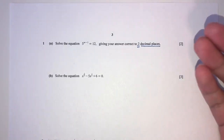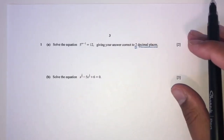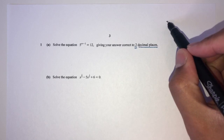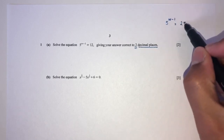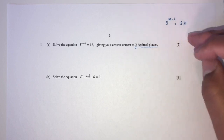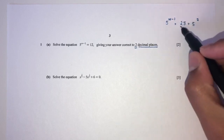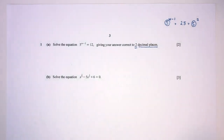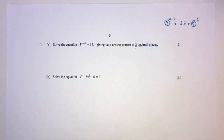Usually what we think about — for example, if we had 5 to the power of (w minus 1) equal to 25, it would be different. We would say 25 is 5 squared, so we convert to the same base. But in this case, we have 12 over here, which is nothing in terms of a power of 5, so we have to go with the logarithm option.